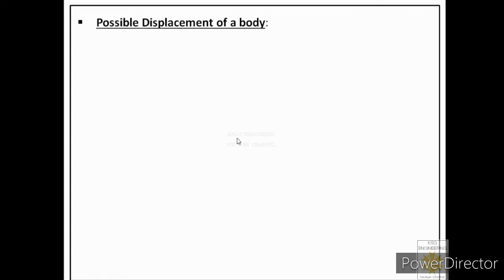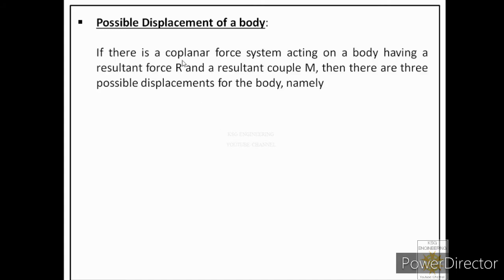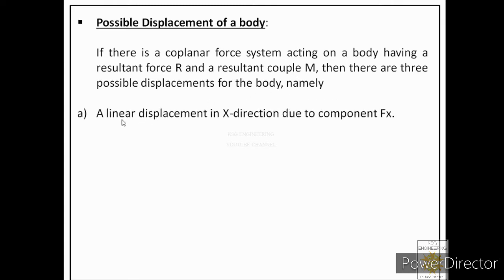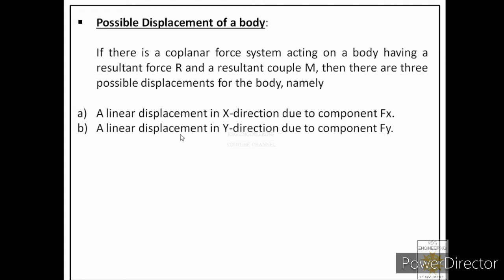In order to understand equilibrium in detail, let us first talk about possible displacements of a body on the application of a force. If there is a coplanar force system acting on a body having a resultant force R and a resultant couple M, then there are three possible displacements for the body. These are: linear displacement in the x direction due to Fx, linear displacement in the y direction due to Fy, and rotation due to the resultant couple M.